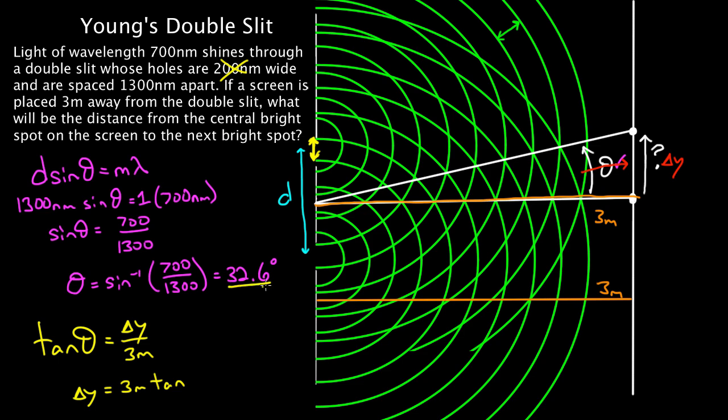Theta we solved for right here, 32.6 degrees. And if you multiply all that out, you get 1.92 meters. That's how big this would be. From here, center point, to the next bright spot is 1.92 meters. That's how you solve this problem.